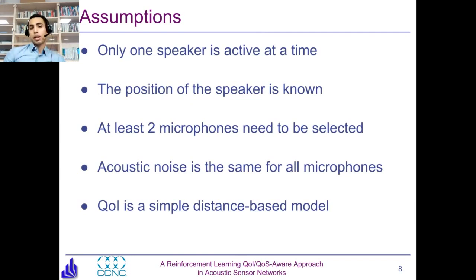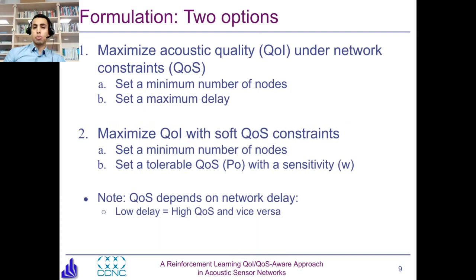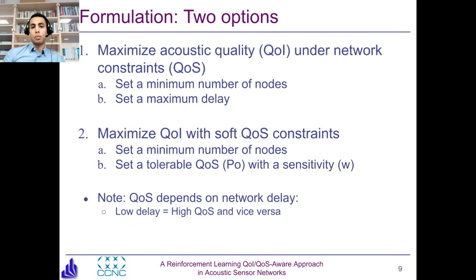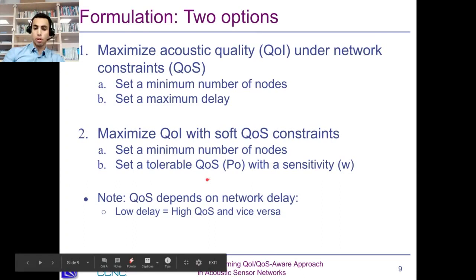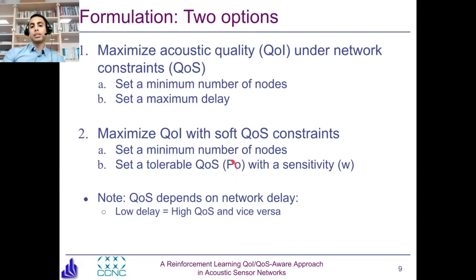For our optimization, we assume two formulations. First, we want to maximize quality of information under network constraints — that is, quality of service constraints — setting a minimum number of nodes and a maximum network delay as a constraint. The second formulation is again maximizing quality of information, but with a tolerable quality of service constraint, where the QoS constraint can be tolerated with some metric called sensitivity.